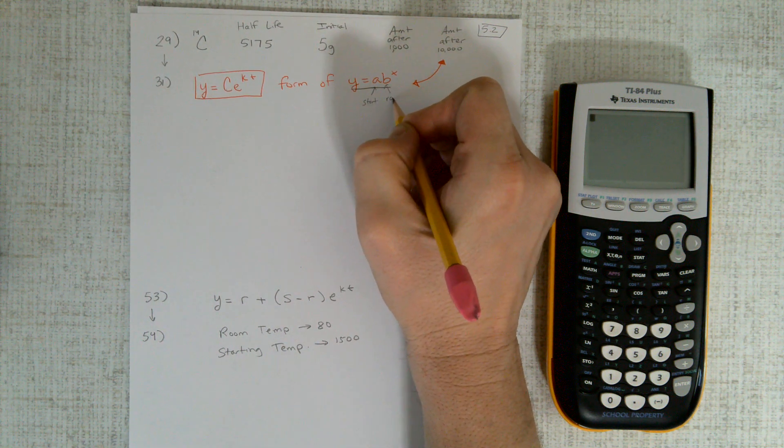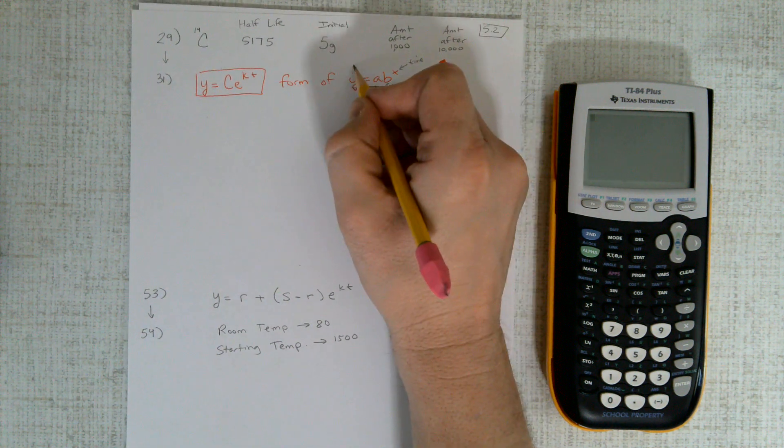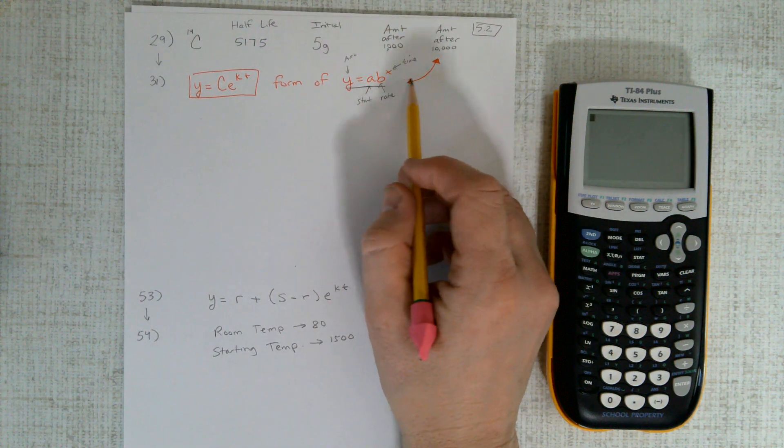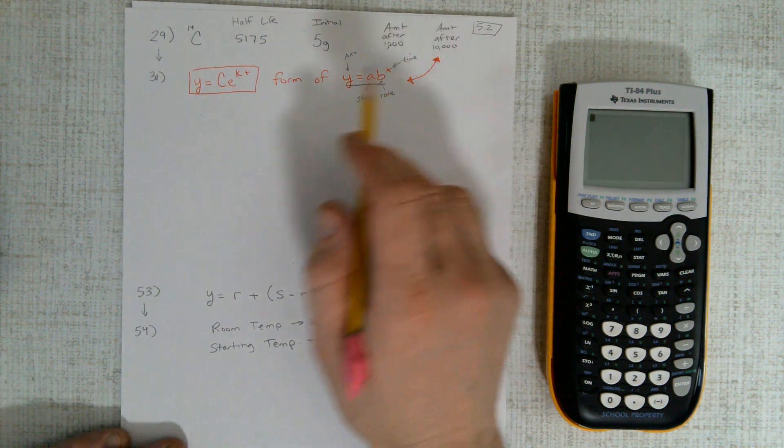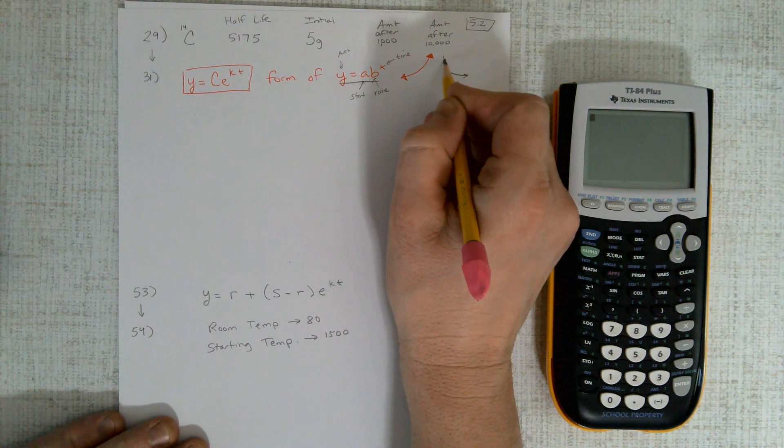We have a starting value here, a rate here, an amount of time here, and an amount. It's nothing more than this equation which graphs like a curve going up for these ones—or no, these ones are going down.